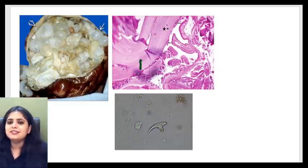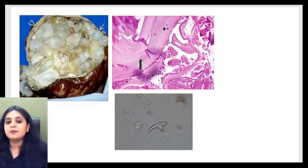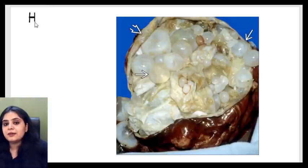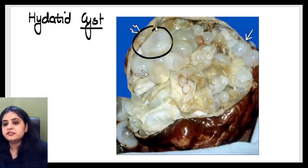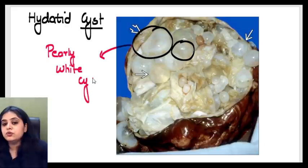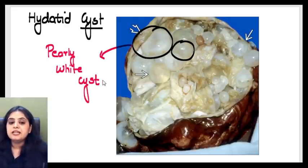The image of the day happens to be quite an easy one, so our second year students would be very happy with this image. This happens to be the very famous hydatid cyst. The first description the examiner expects from you when talking about a hydatid cyst is obviously the multiple cysts, but their color is quite characteristic — they show a pearly white cyst wall.